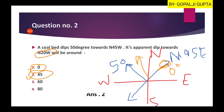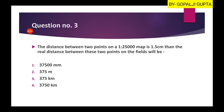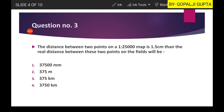Question three: the distance between two points on a 1:25,000 map is 1.5 cm. The real distance between these two points in the field will be...